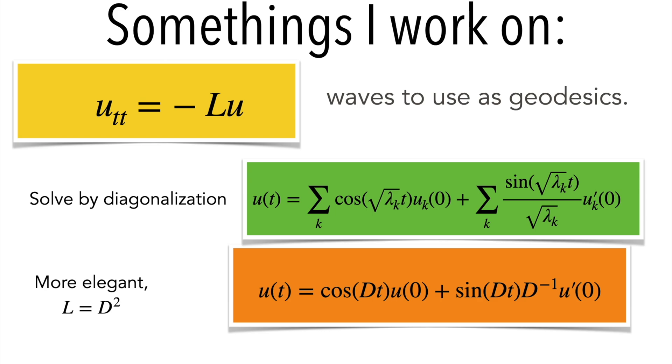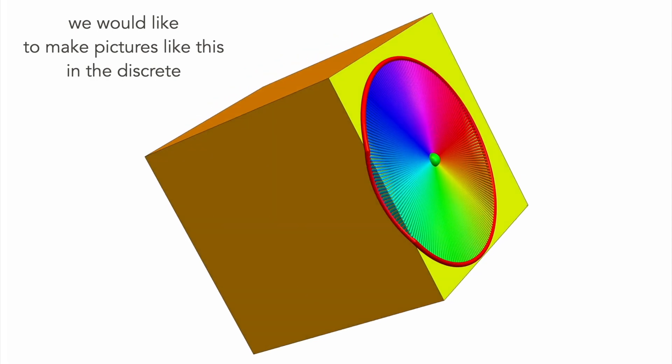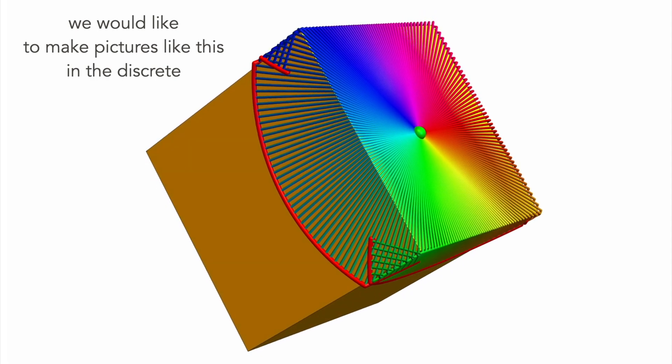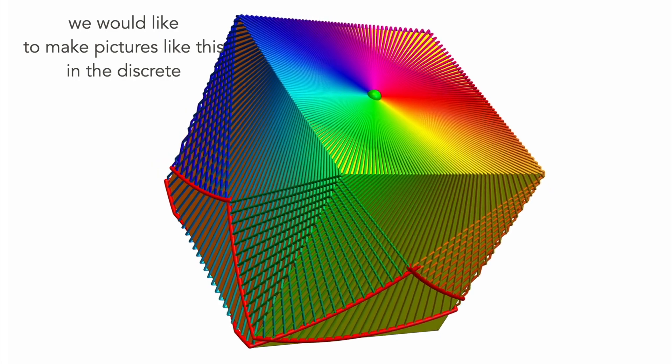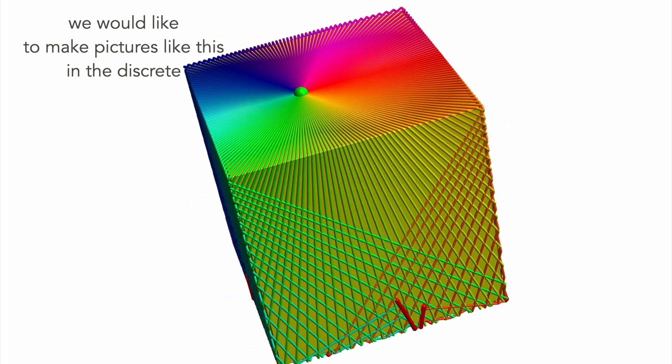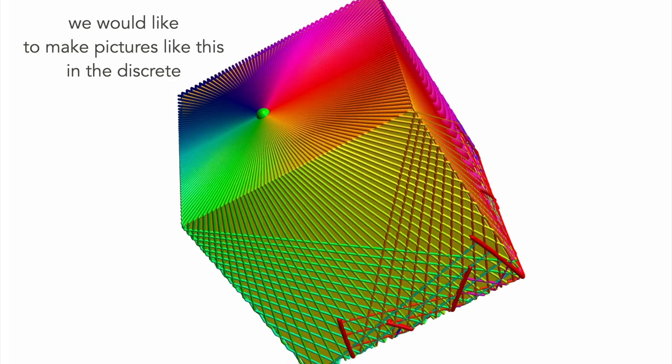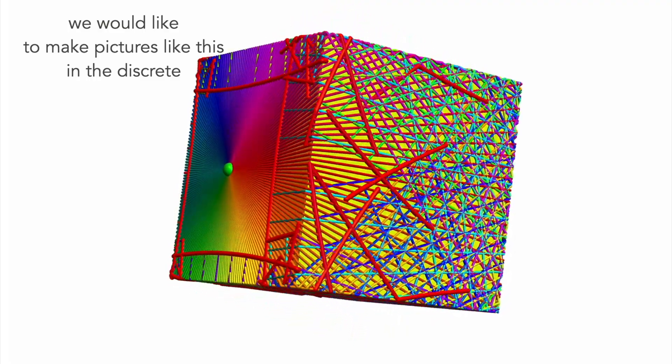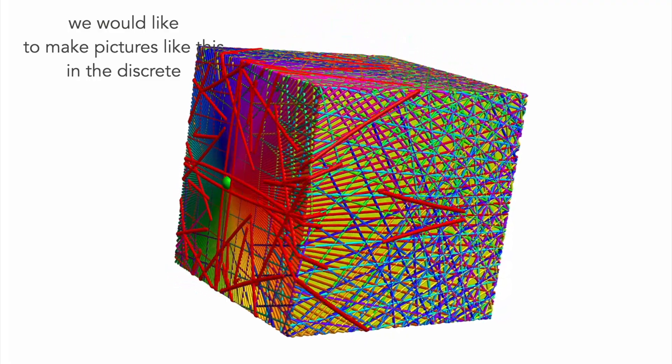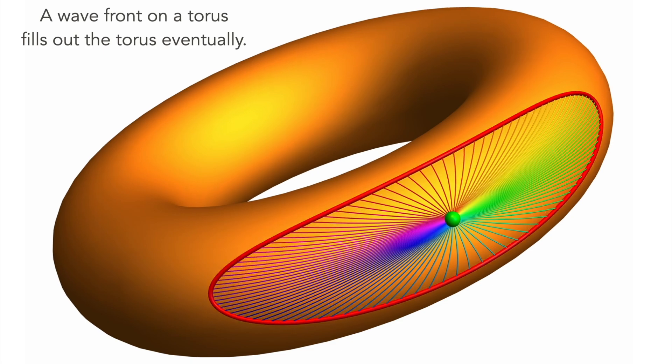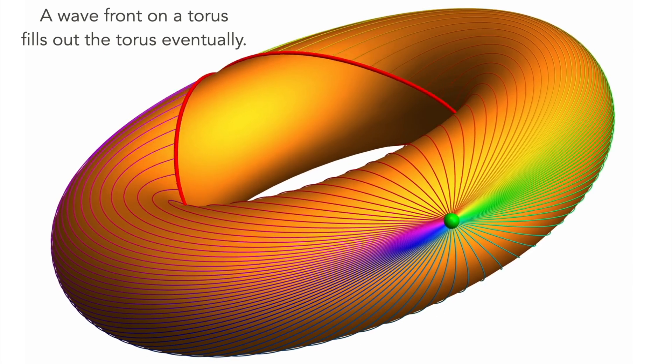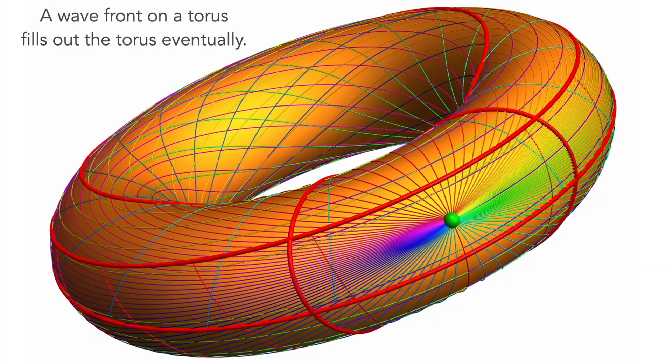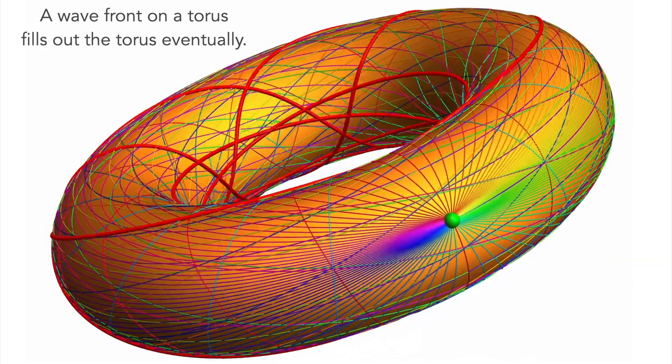There's a problem to define geodesics in a simplicial complex or graph. We would like to define geodesics in the discrete like here. This is a simulation of a geodesic evolution on a cube and there is the front, the wave fronts, become more and more dense here. This is something we are trying to prove this summer. It's an interesting problem also on a torus where the mathematics should allow to actually prove us that the wave front becomes dense.